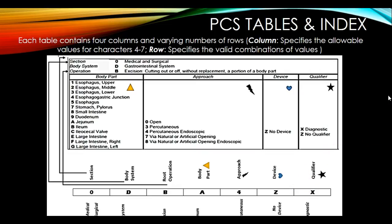The PCS table is an index — here's an example from the PCS manual with some clarifications added. Each table contains four columns and varying numbers of rows. A column specifies the allowable values for characters four through seven, while a row specifies the valid combinations of those values. In this table, the section number is 0, the body system is D, and the root operation is B — so the first three characters of this code are 0DB.